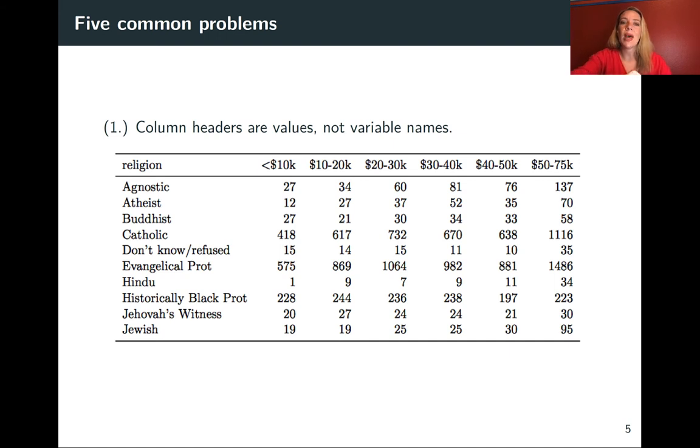So the first case is that column headers are values, not variable names. This is an example. In this case it's giving some different religions, giving different annual incomes, and then the numbers in the cells are some count. This might be for a census or something like that. In this case, one of the things that we likely would care about are those income levels. We might want to do something like facet plots by income levels. However, these are stored up in the column names. When we're doing everything with ggplot and with the different tidyverse functions, we're working with stuff that's in a column. If we have things in the column names, that becomes much harder to work with.